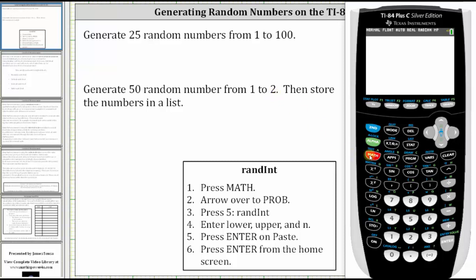To begin, press MATH, right arrow to probability, press 5 for randInt. In our case, 1 is the lower bound, ENTER.